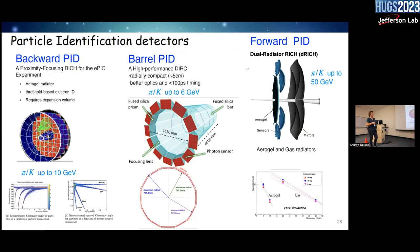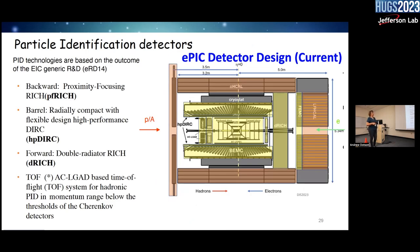For the forward area where most hadrons go, we use a dual-radiator RICH (dRICH), providing pion-kaon separation up to 50 GeV. As the name says, it has two radiators: aerogel and gas. Depending on the momentum range, one or the other contributes to the PID. The dRICH takes considerable space but we really need it. The detector layout shows the DIRC bars inside the solenoid, proximity-focusing RICH after the tracking, and the dRICH in the forward section.